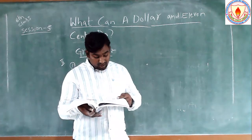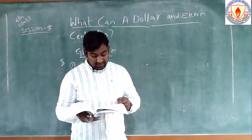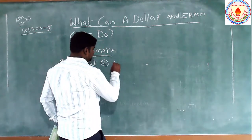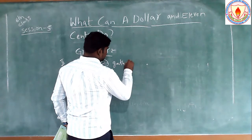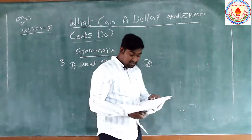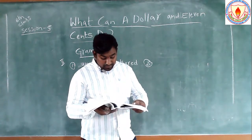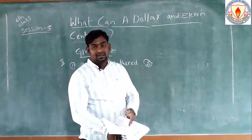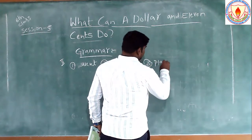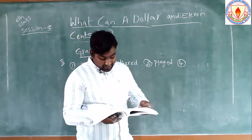All my friends blank on that occasion — the verb is 'gather.' The past tense form is 'gathered.' So: 'All my friends gathered on that occasion.' Next: Rahman blank music — the verb is 'play.' The past tense form is 'played.' So: 'Rahman played music.'